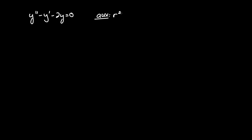So y'' would be r squared, minus y' which is r to the 1, or just r, minus 2 times r to the 0, which is 1. So negative 2 times 1 is negative 2, giving us r squared minus r minus 2 equals 0.